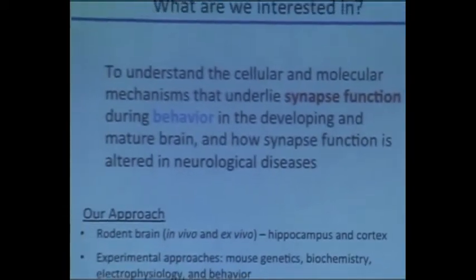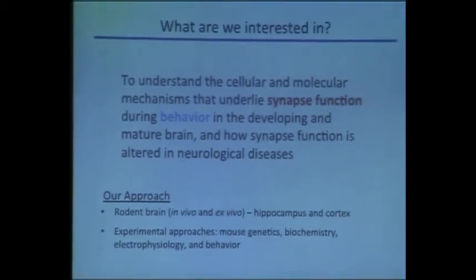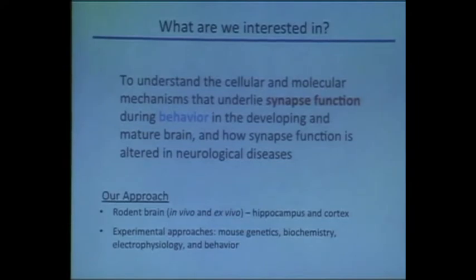So carrots and Fragile X — why do we think retinoic acid is important for Fragile X? My lab is a basic science lab that studies cellular and molecular mechanisms underlying synapse function during behavior. This can be in the developing brain, in a normal brain, or in a neurological disease brain. Our focus is on synaptic function and linking it to behavior, trying to understand how synaptic dysfunction contributes to behavioral abnormality.